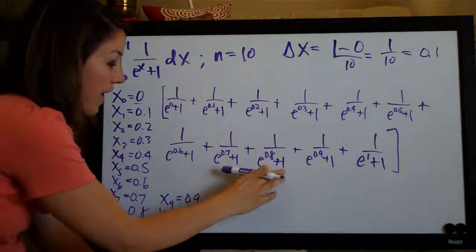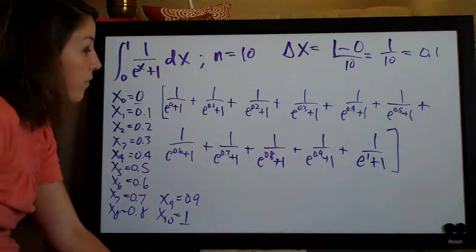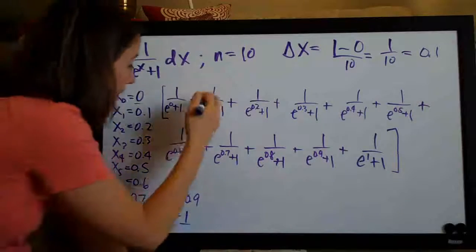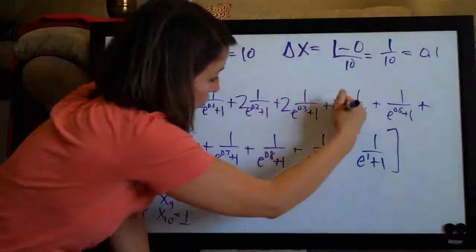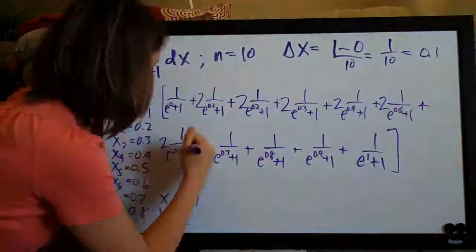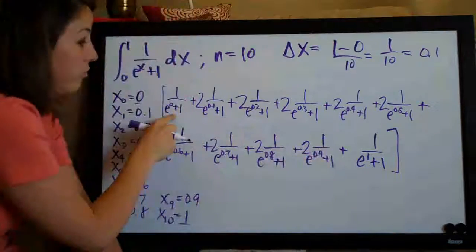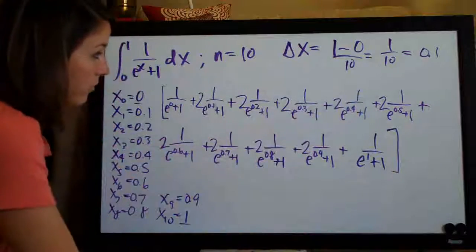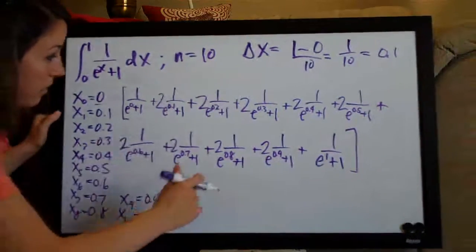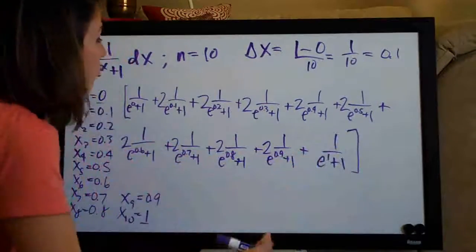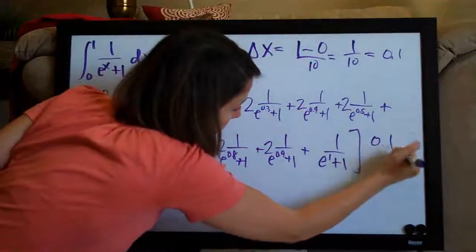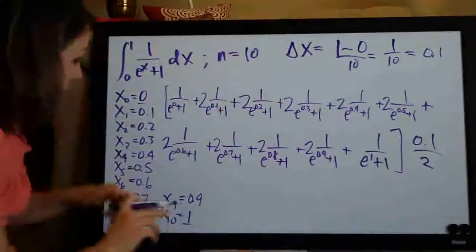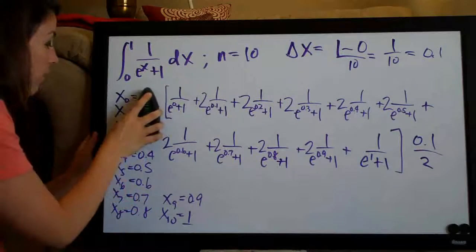Now once you've done that, the trapezoidal rule says that you multiply every term in here except the first one and the last one by two. So I go ahead and put two, two because we're going to multiply each one of these by two. But not the first one and not the last one. So that's most of the formula except the last thing we have to do on the outside of this, we multiply by delta x which we got was 0.1 over two. The two always stays the same. It's just delta x over two.